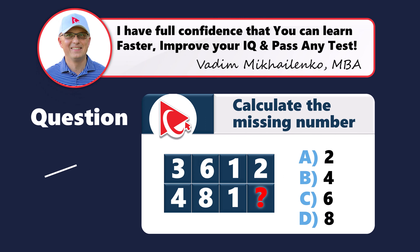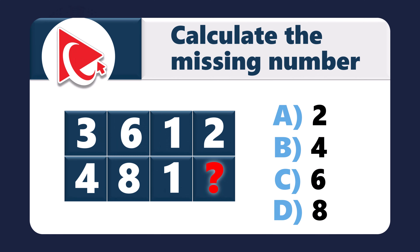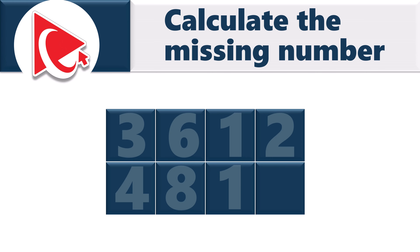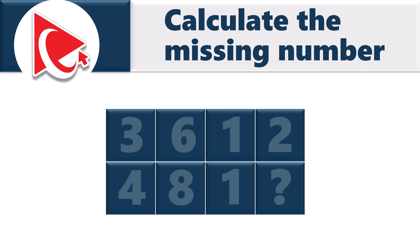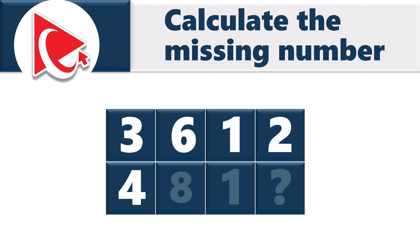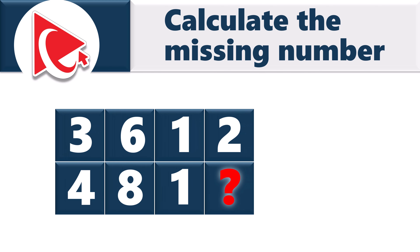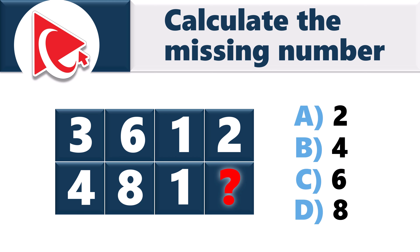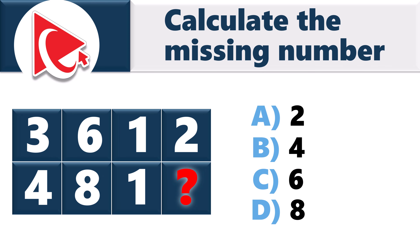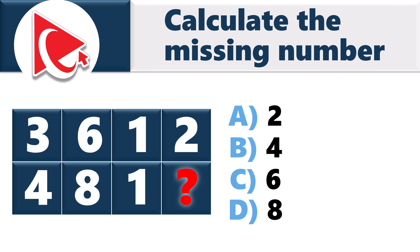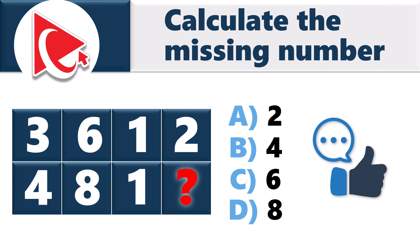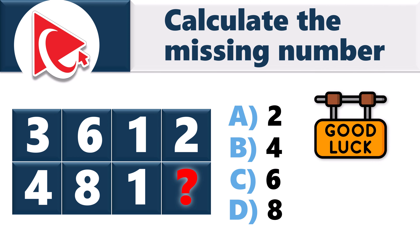Get ready for a mental rodeo. I've uncovered a question that's more confusing than figuring out why we park on driveways and drive on parkways. You are presented with a 4 by 2 matrix with 7 numbers, and you need to calculate the 8th number. The numbers in the first row are 3, 6, 1, and 2. The numbers in the second row are 4, 8, 1, and then comes the missing number. Select the answer out of four choices: A (2), B (4), C (6), or D (8). Take a close look to see if you can come up with the answer, and post your solution in comments.